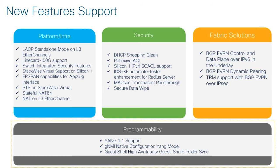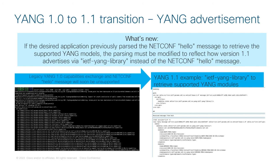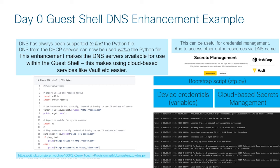We'll now move into our new programmability features. First, with the transition from YANG 1.0 to YANG 1.1, there is no difference for customers working with YANG. The only exception is if the desired application previously passed the NETCONF hello message to retrieve supported YANG models — now the passing must be modified to reflect how version 1.1 advertises via the IETF YANG library. Additionally, with guest shell DNS enhancements in 17.10, DNS servers are now available for use within the guest shell, which allows using cloud-based services like HashiCorp Vault more easily.